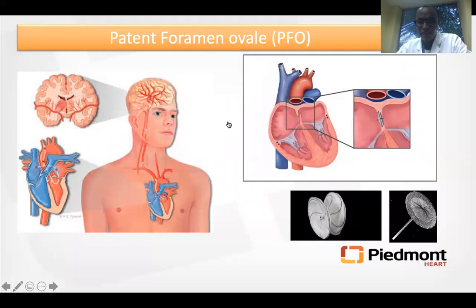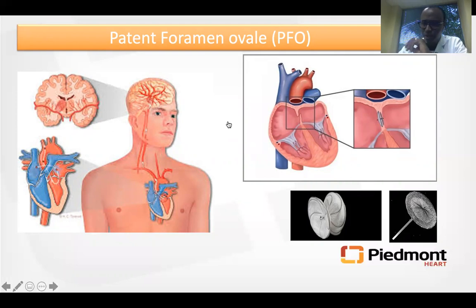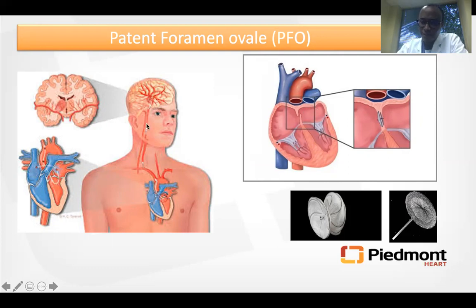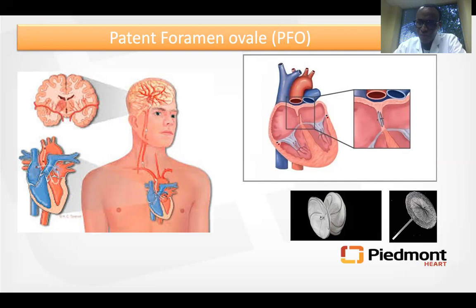Patent foramen ovale is the second crossroads between stroke and structural heart disease. The PFO is a communication between the right atrium and left atrium. If patients have deep vein thrombosis, a blood clot can paradoxically traverse this PFO and cause a stroke. Since PFO is very common in the normal population — about 25% — we have to exclude other causes of stroke before attributing it as a PFO-associated stroke.